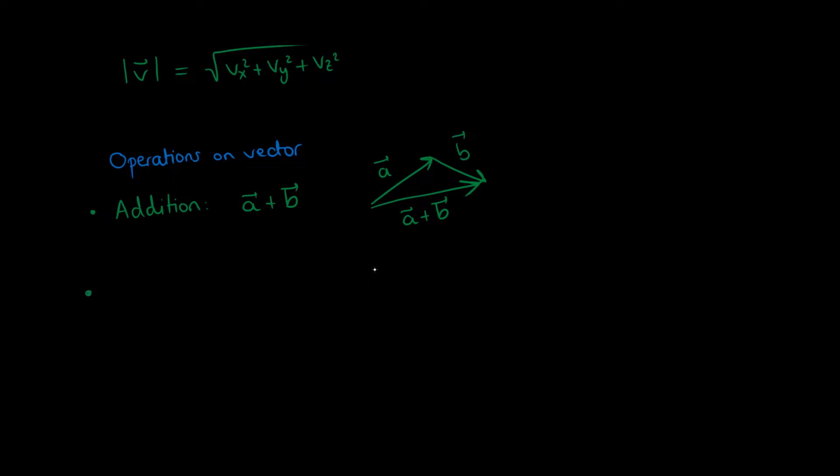We can also scale vectors multiplying them by a scalar. In component form we just multiply all of the components by the same number alpha and this scales the vector.